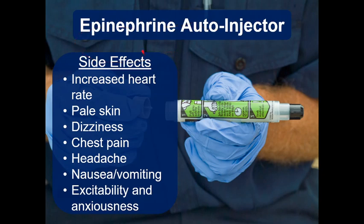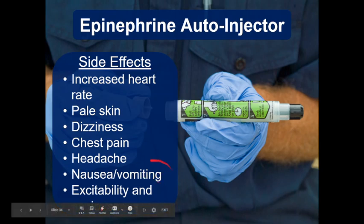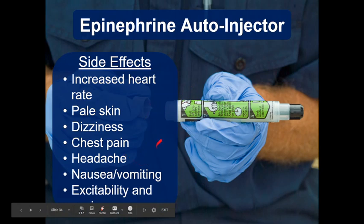Side effects of epinephrine — though these are really just expected effects: increased heart rate, pale skin from vasoconstriction, dizziness from tachycardia, possibly chest pain from tachycardia, headache from slightly decreased perfusion, nausea and vomiting, excitability and anxiety. It's the classic fight-or-flight response. These are expected when you give epi.